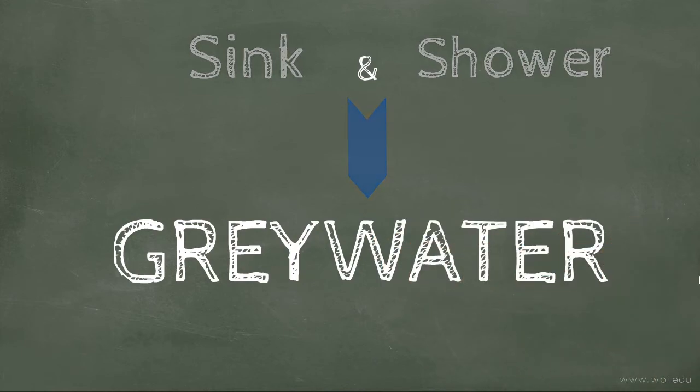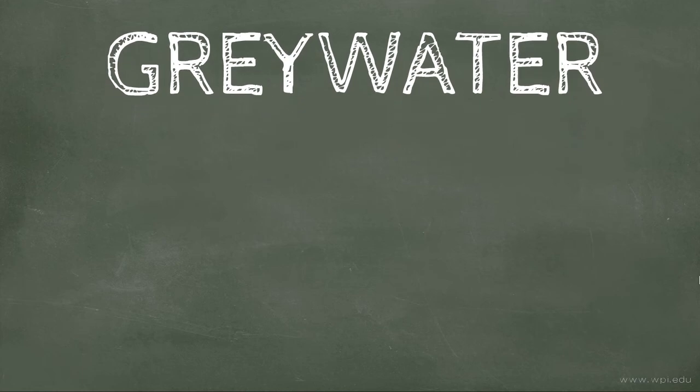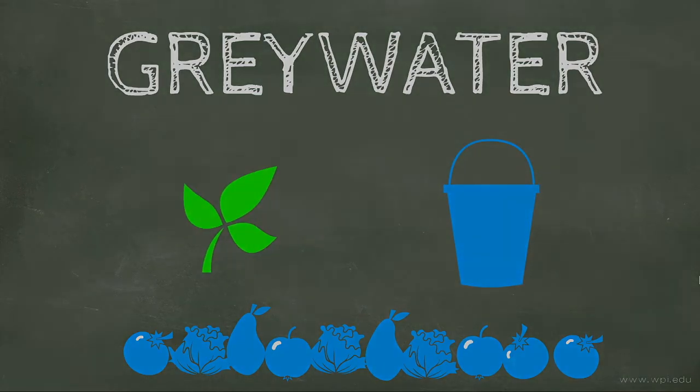We can also reuse and recycle the water by using waste water from sinks and showers, also called grey water. By separating grey water from toilet waste water, we can reuse it for irrigation and thereby reduce our domestic water consumption by 50%.